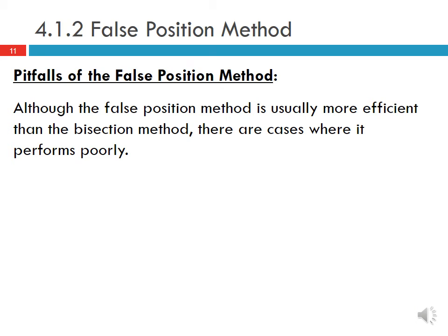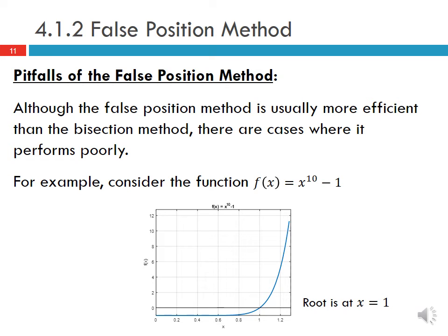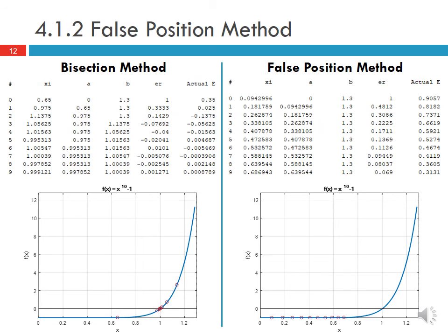Although the false position method is usually more efficient than the bisection method, as in the previous example, there are cases where it performs poorly. For example, if we consider the function f(x) = x¹⁰ - 1, which is shown graphically here, we can see that the root is at x = 1. We can use both the false position method as well as the bisection method to find this root with a starting interval of 0 and 1.3.